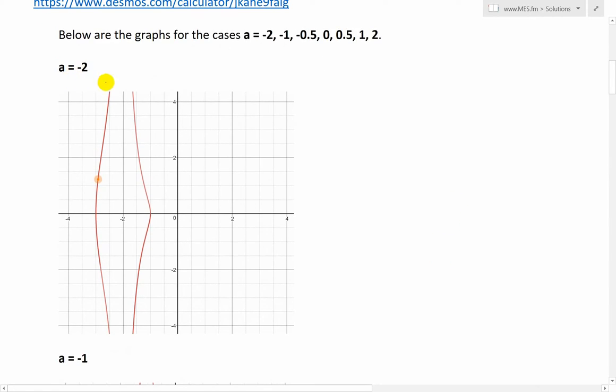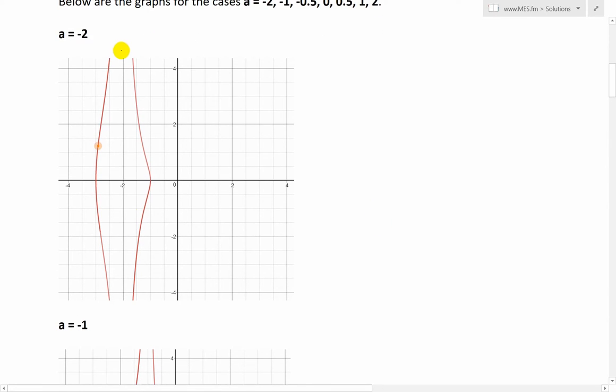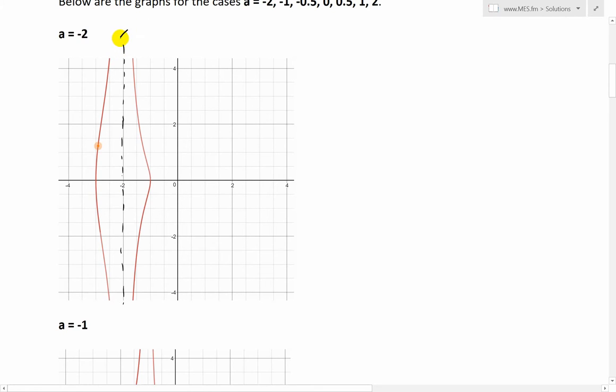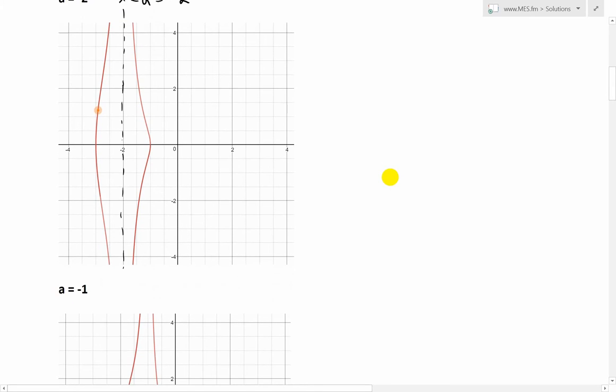So when we have a equals to negative 2, we have a graph that looks like this. And in fact, this negative 2 is an asymptote line where these two branches, or these two curves on the left and right of it, actually approach this asymptote line, which is at x equals to a, where it's in this case, negative 2. So that's quite amazing. And again, this is the axis, y and x like that.